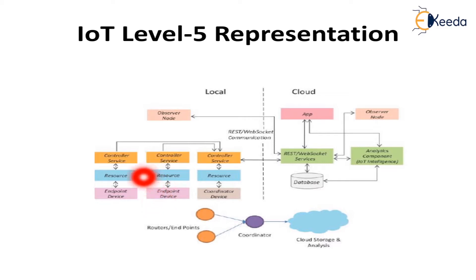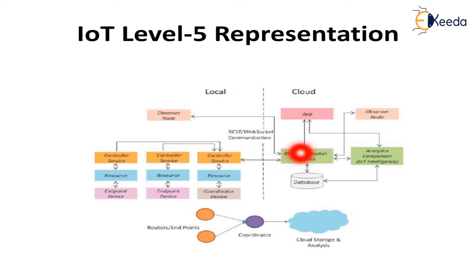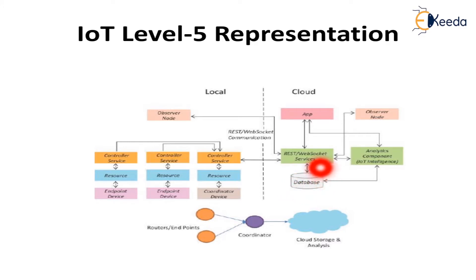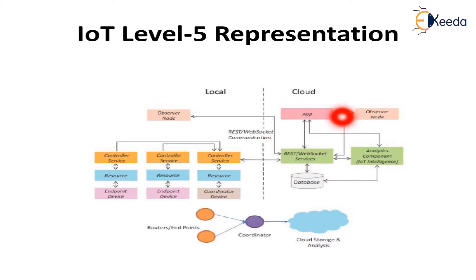The endpoint devices are sensors and microcontrollers connected to resources, which is the software part, and then to control services. Control services are native services acting as a data interface between the REST and WebSocket services, which in turn connect to the application. The analysis component provides IoT intelligence, where data is analyzed and managed with the help of the database, which handles storage, management, and analytics. The observer node is connected to the REST and WebSocket services via communication protocols, and applications are available for end users in an easy-to-understand format.